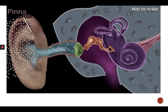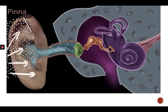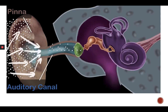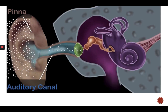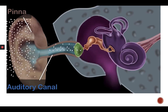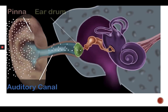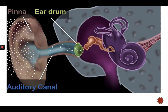The pinna is the part you can see and touch. Its job is to collect as many sound waves as possible and channel them into the auditory canal.